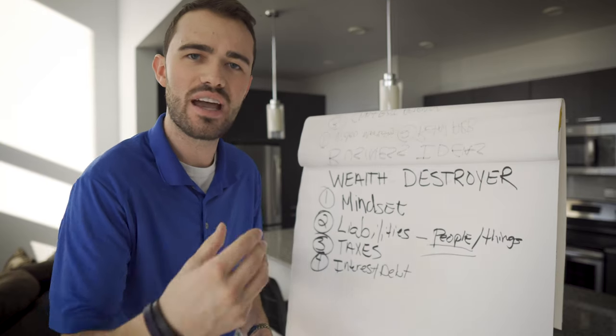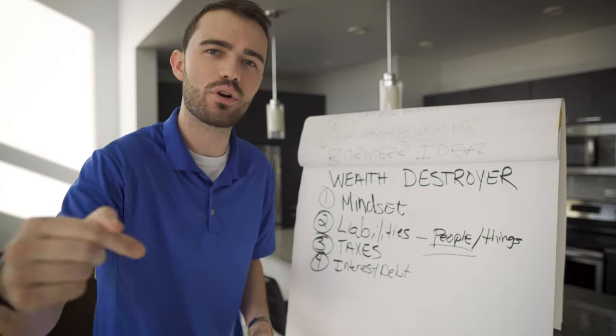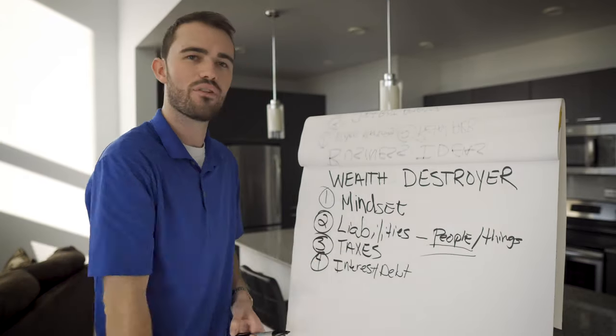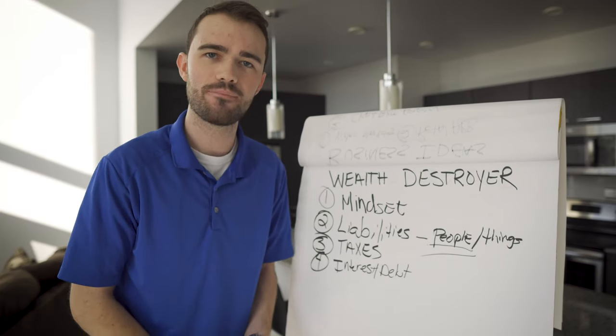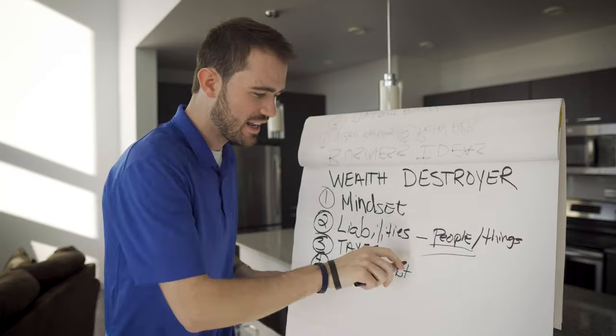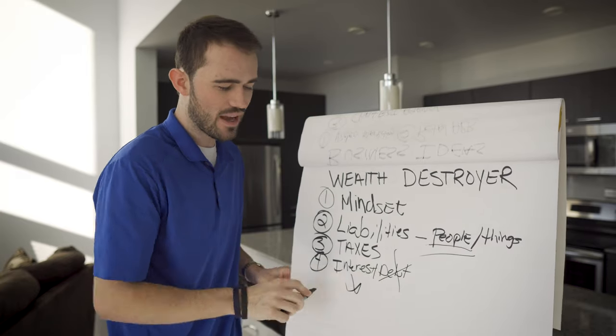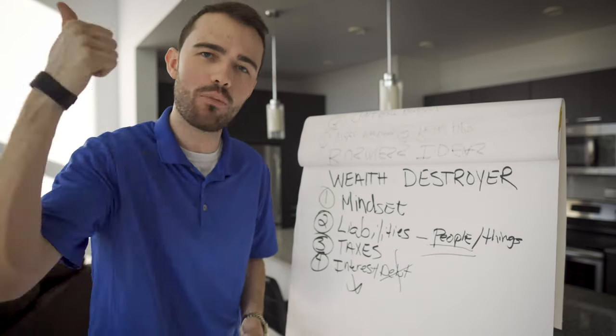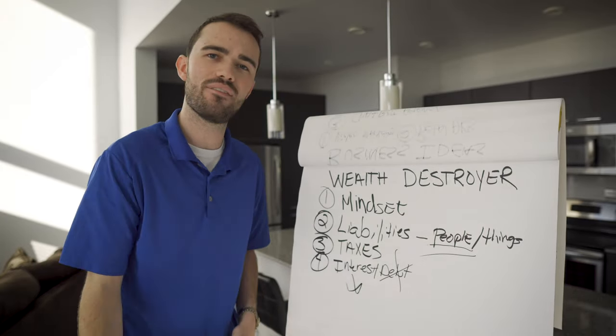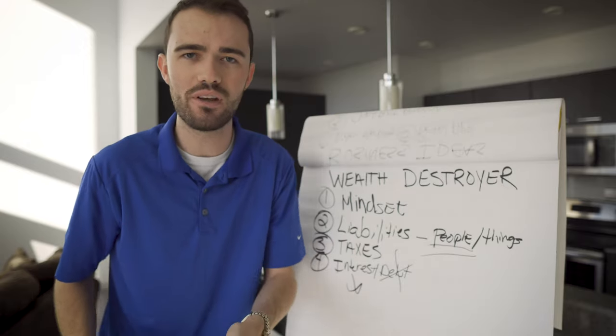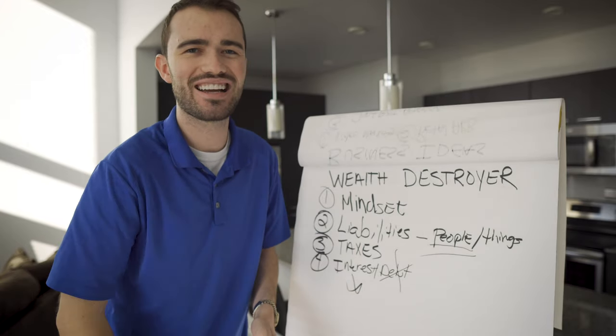Number three, taxes. Understand how to play the game and get that number down in order to save yourself from destroying your wealth. Number four, your debt and your interest payments. The moment that you can eliminate debt and pay down on that so that interest goes down is the moment that you see your net worth, your pockets, your wallet, your bank account go up. Again, I hope this video is not only motivational but informative and I will see you guys on the next video.